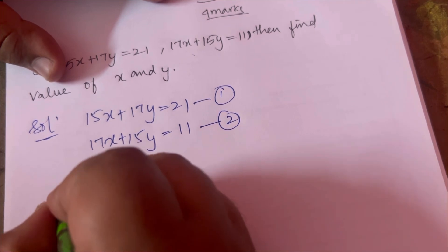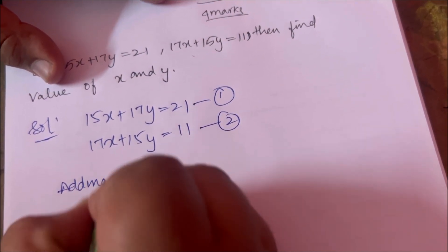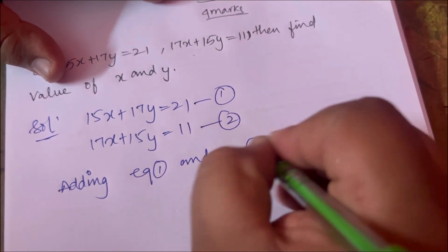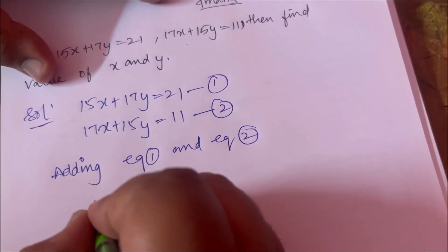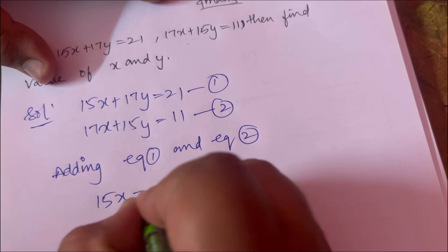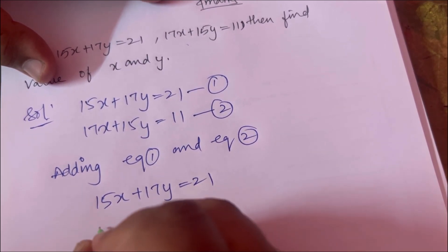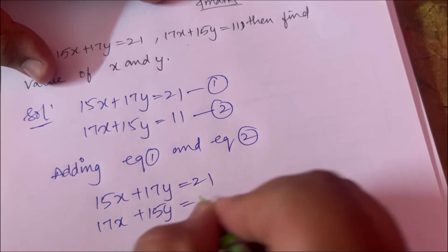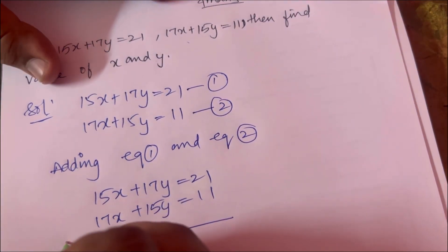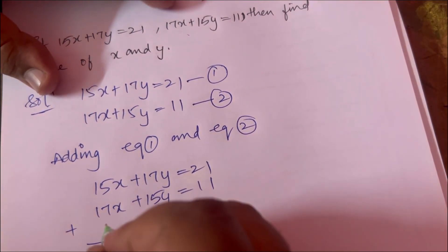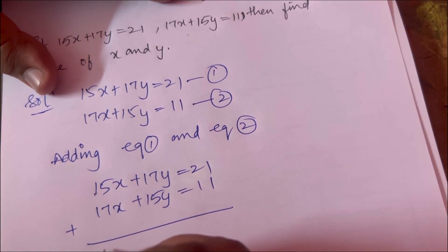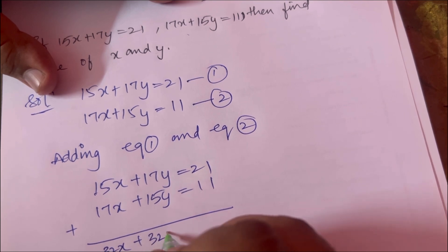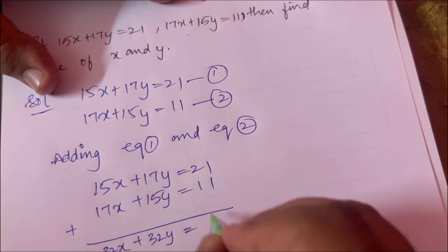First, we need to add the two equations. Adding equation 1 and equation 2: 15x plus 17y equals 21, plus 17x plus 15y equals 11. So 15 plus 17 gives 32x, plus 32y.